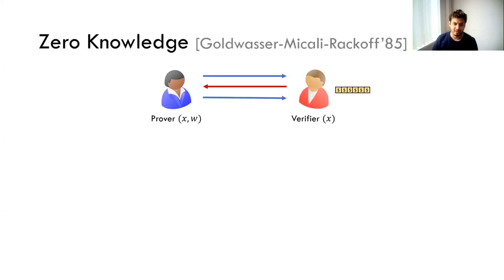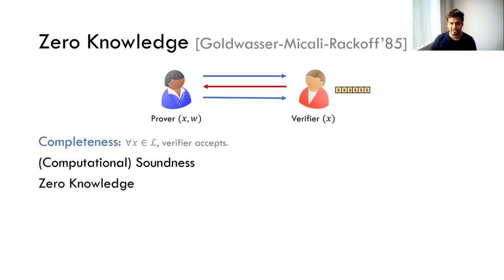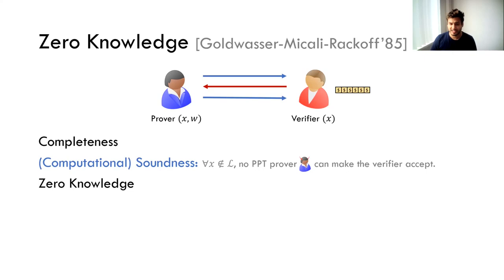Let's jump right in with zero knowledge, a wonderful notion introduced in the work of Goldwasser, Micali and Rackoff back in 1985. The prover and the verifier have some common statement x, and the prover is trying to prove that the statement belongs to some language L. There's some interaction between them, at the end of which the verifier either accepts or rejects. This protocol has three properties: completeness, which says for every statement in the language the verifier accepts; and computational soundness, which says for every statement not in the language, no computationally bounded prover can make the verifier accept.